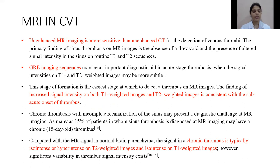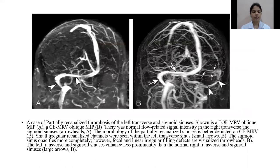Chronic thrombosis with incomplete recanalization of the sinus may pose a diagnostic challenge at MR imaging. As many as 15 percent of patients in whom sinus thrombosis is diagnosed at MR imaging may have a chronic 15-day-old thrombus. The signal in a chronic thrombus is typically iso- to hyperintense on T2-weighted images and isointense on T1-weighted images. These images show partially recanalized thrombosis in the left transverse and sigmoid sinuses compared to the right, with less enhancement on the left side.